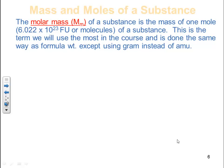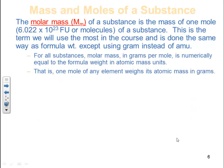To get around dealing with individual ions, formula units, and molecules, we use the concept of molar mass (capital M, subscript m). The molar mass of a substance is the mass of one mole — 6.022 × 10²³ formula units or molecules of a substance. This is the term we'll use for most of this course, and it's calculated the same way as formula weight, except we use grams instead of amu.